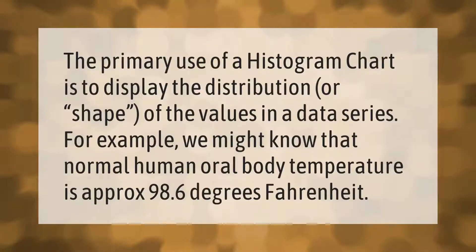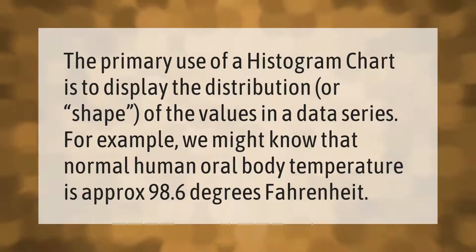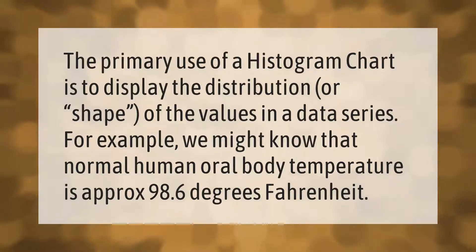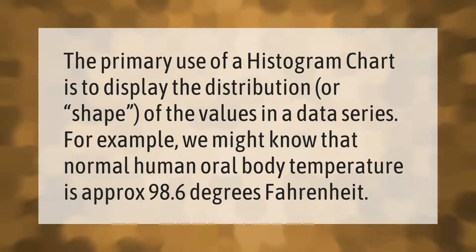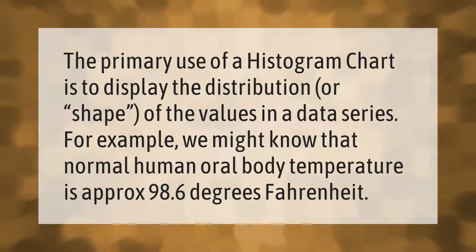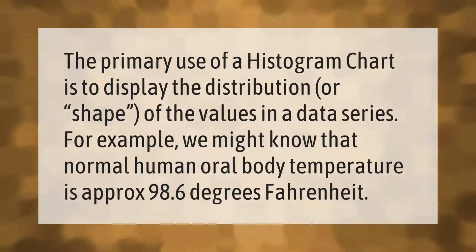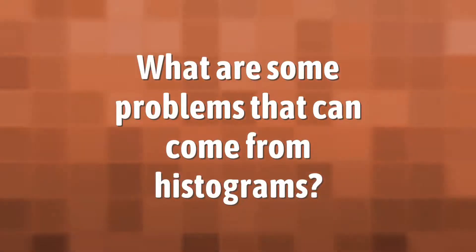The primary use of a histogram chart is to display the distribution or shape of the values in a data series. For example, we might know that normal human oral body temperature is approximately 98.6 degrees Fahrenheit.